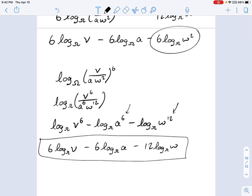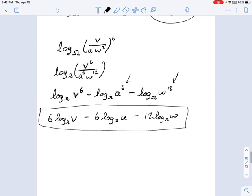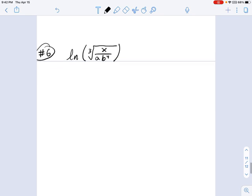So whichever way you like doing it, I'm actually partial to this second method, where we distribute the exponent inside the parentheses first. Okay, so moving on, last example.